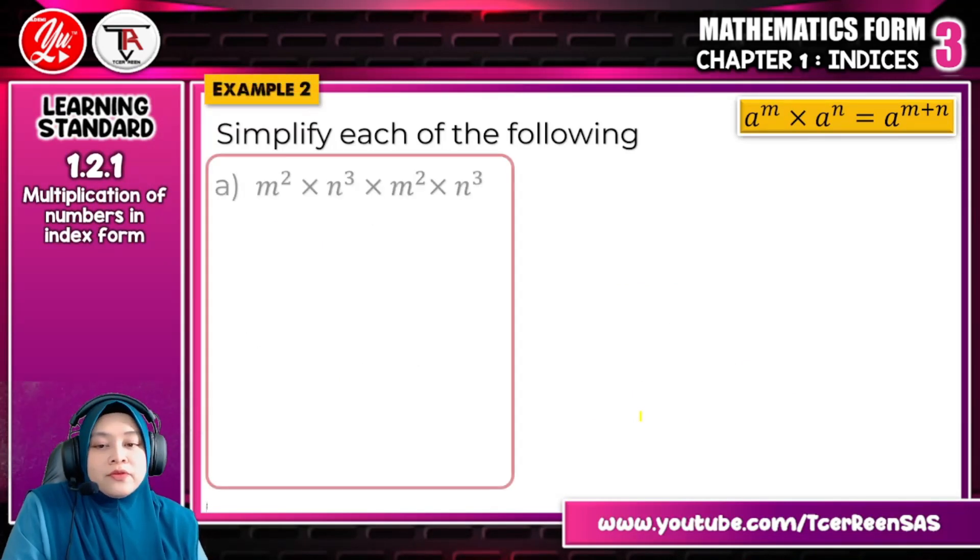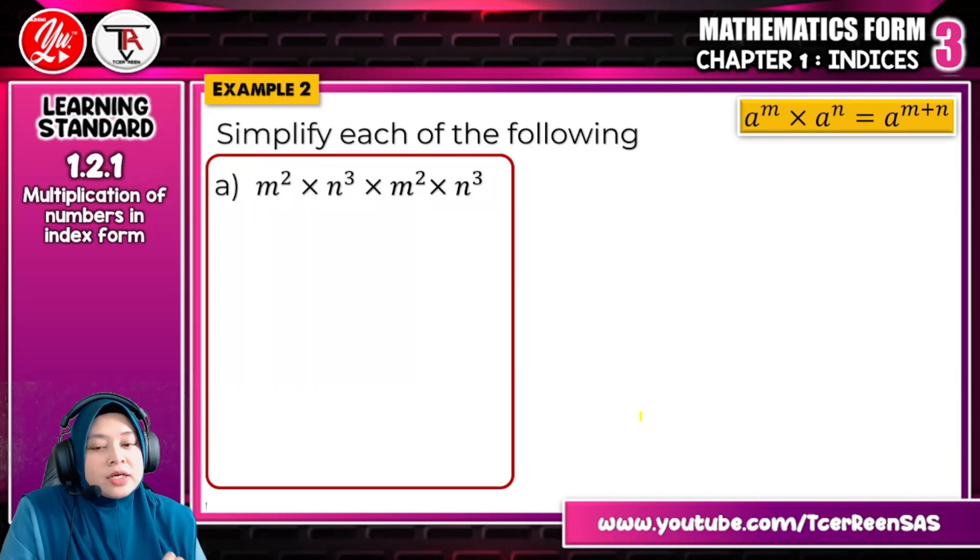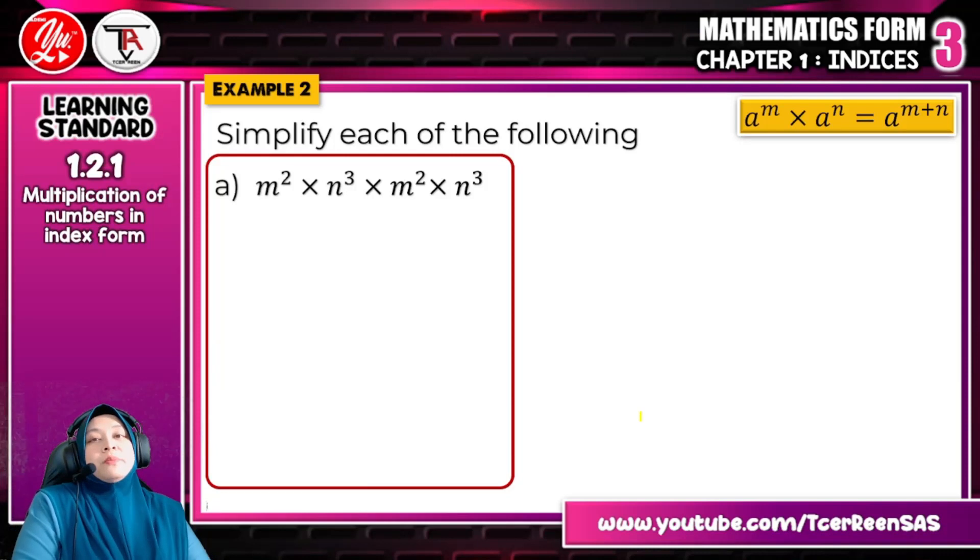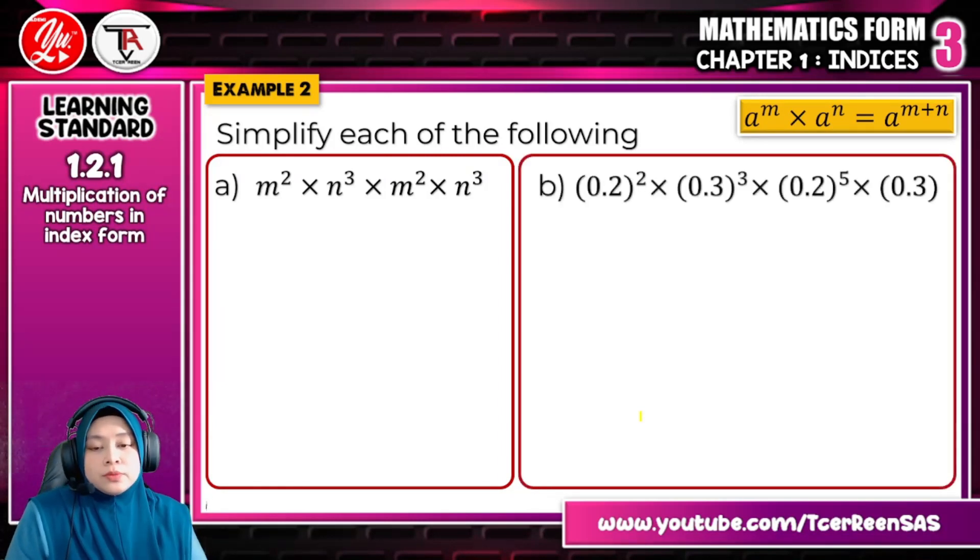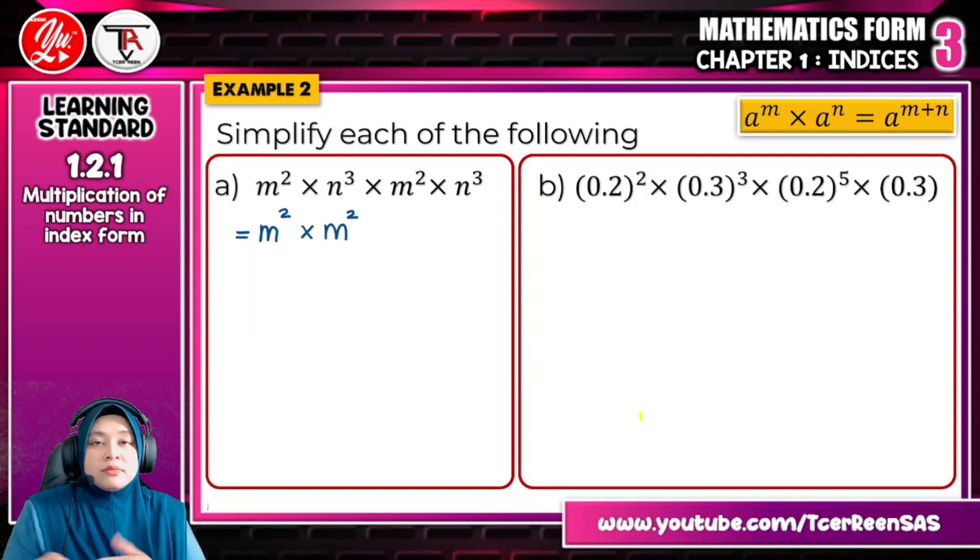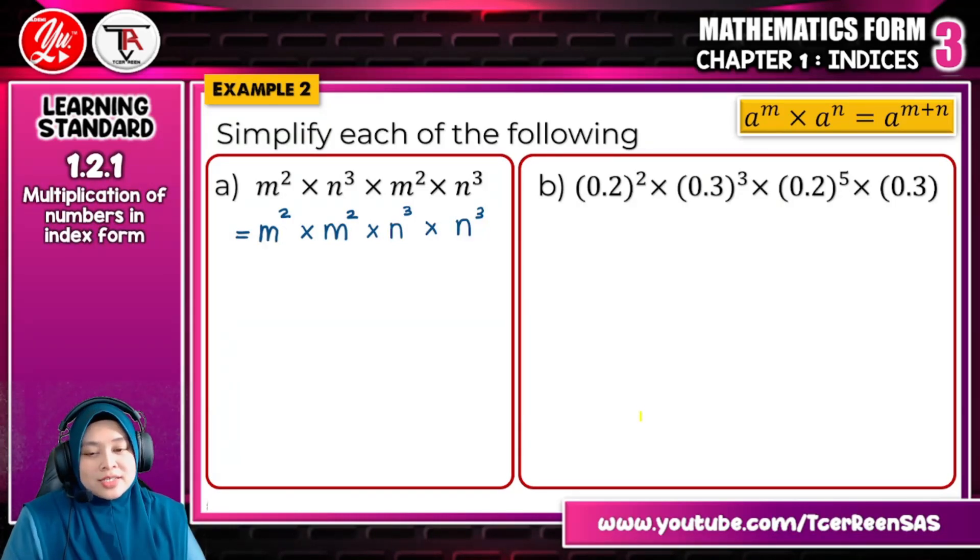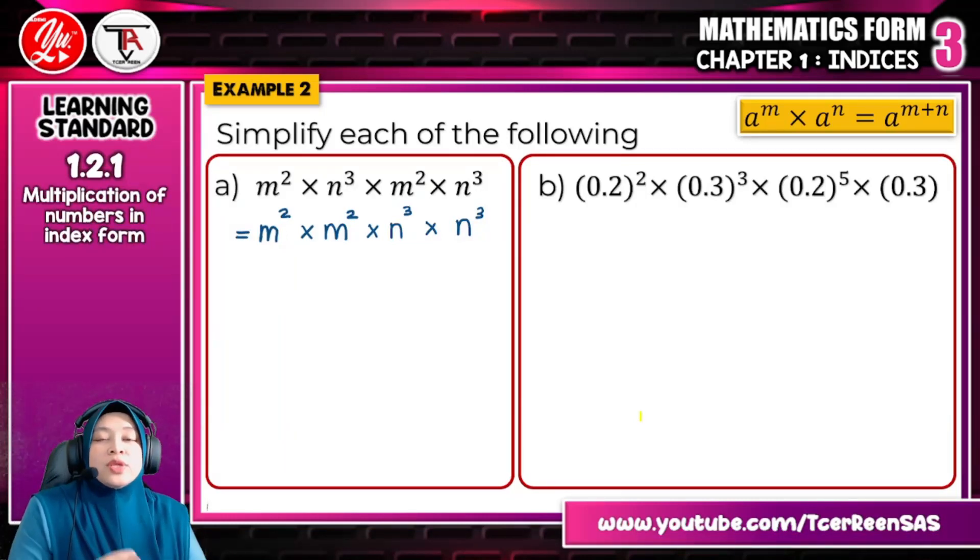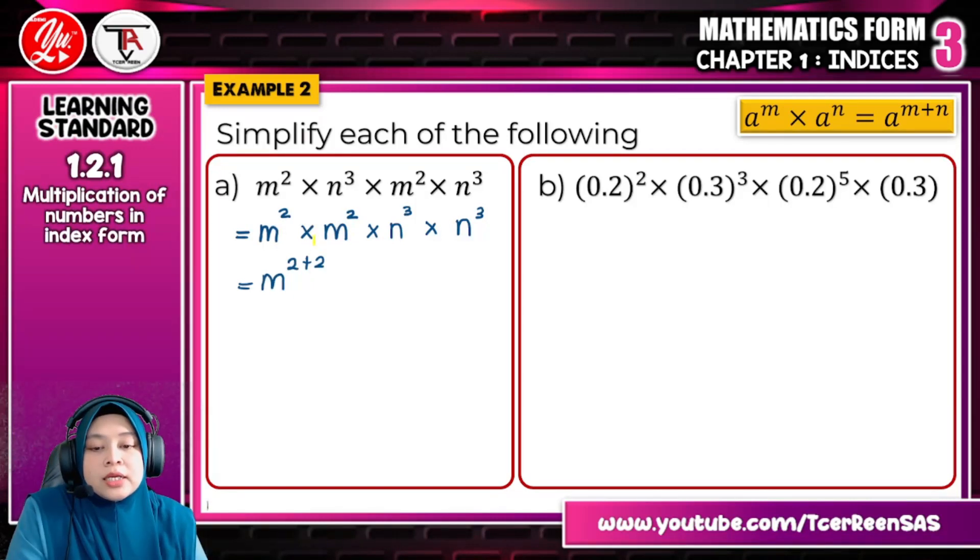Next is example 2. For example 2, a little bit different. It combines 2 variables, means 2 bases. For 2 bases question, you cannot combine all just like that. You need to arrange first m with m and n with n. Or else, if you are getting better after this, you don't need to arrange. For the first time, just arrange it so that it is easier for you to find the final answer. M with m only and n with n only.